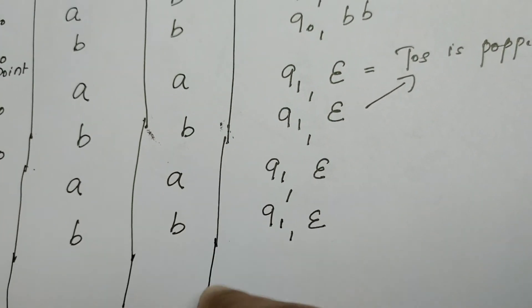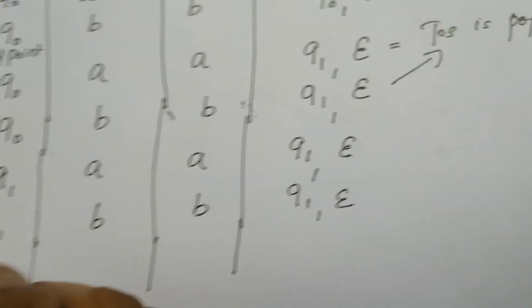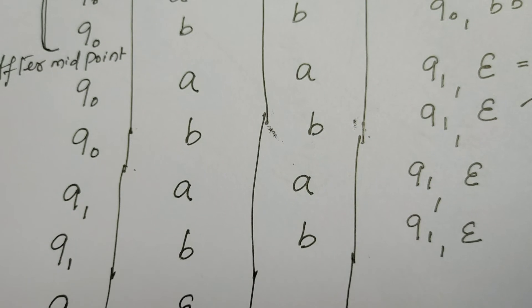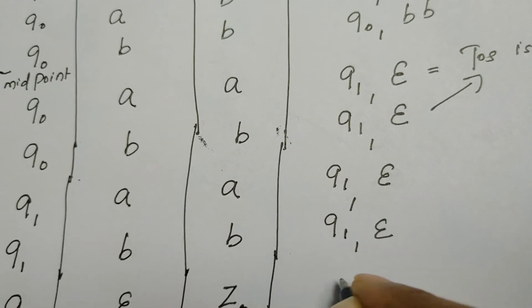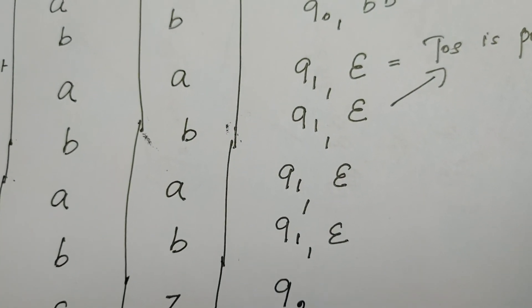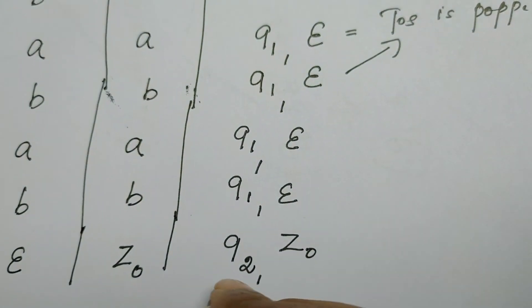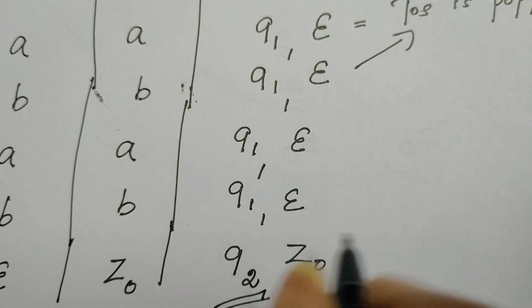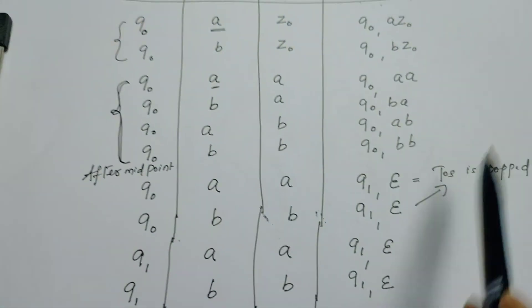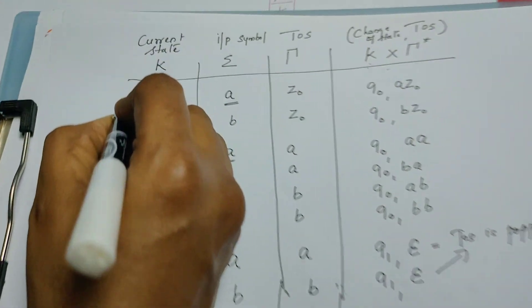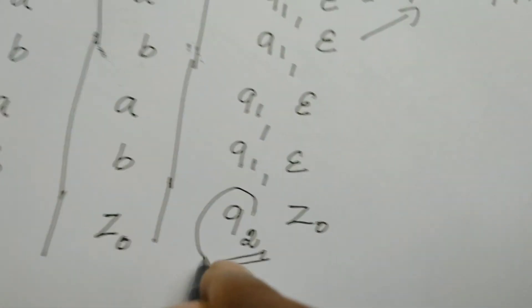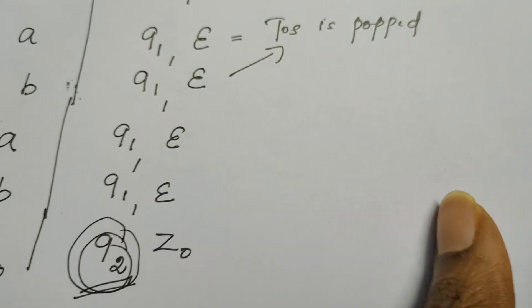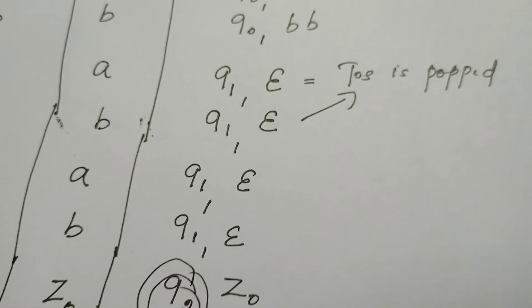After reading all characters of W^R — the second half of the string — the PDA reads epsilon, meaning it has reached the end of the string. At that point the stack must be empty, containing only Z₀. In that case, allow the PDA to enter q₂, retaining Z₀ as is. Q₂ is the final accepting state. Overall, three states are used: q₀ is the start state, q₁ is the intermediate state, and q₂ is the final or accepting state.